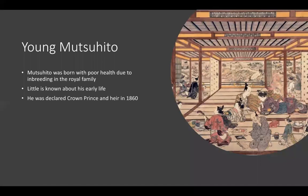Mutsuhito was born with poor health due to inbreeding in the royal family. He was very deformed — he had a curved spine and problems with his health. Besides this, little is known about his early life, and he was declared crown prince and heir in 1860. You can see in the picture some Japanese people working on the arts, a woodblock print.